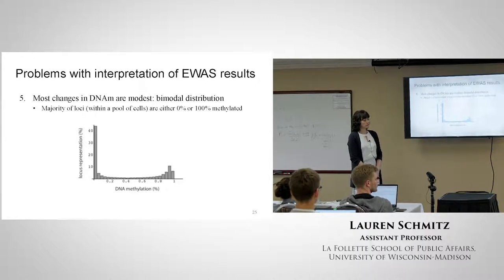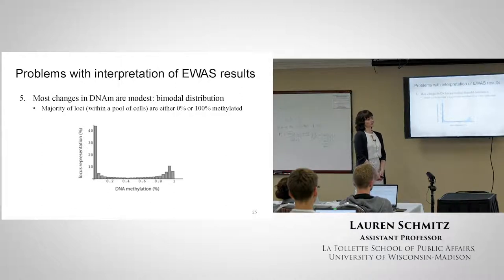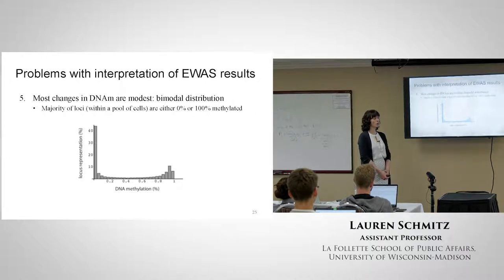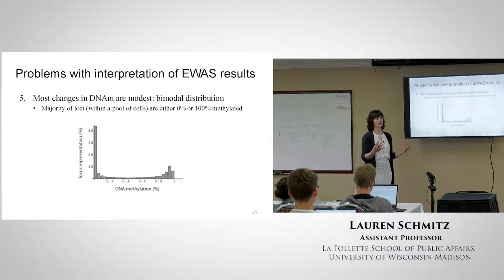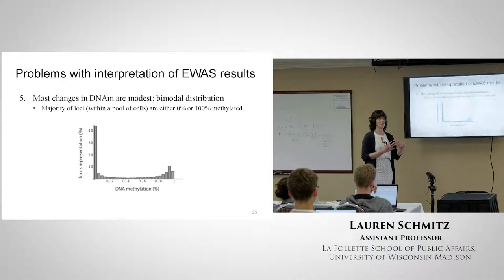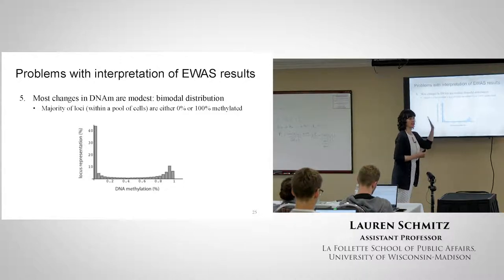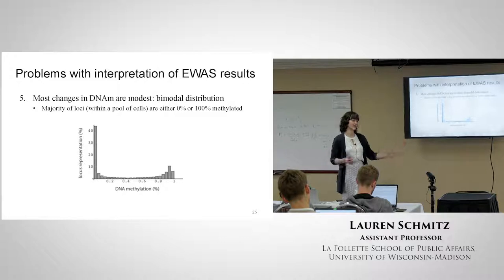On the question of how fast methylation can change - it's a good question and it really depends on the type of mark, the gene, and the exposure. One epigeneticist told me that 80% of our methyl marks are put down in utero and tend to stay stable throughout the life course. Many of them never change, and there are about 20% that can fluctuate. In terms of how long it takes them to change, that's less certain.